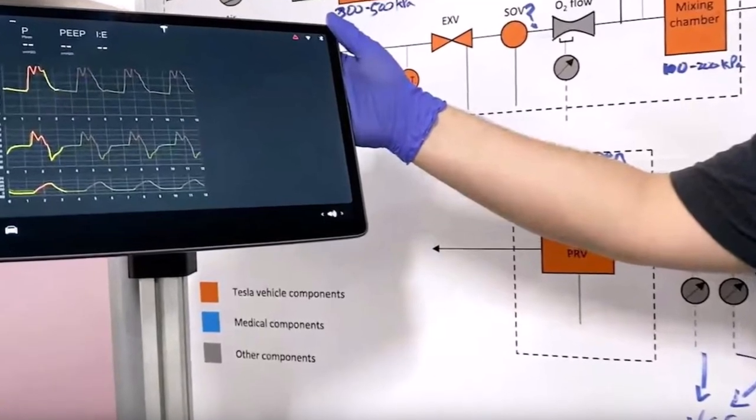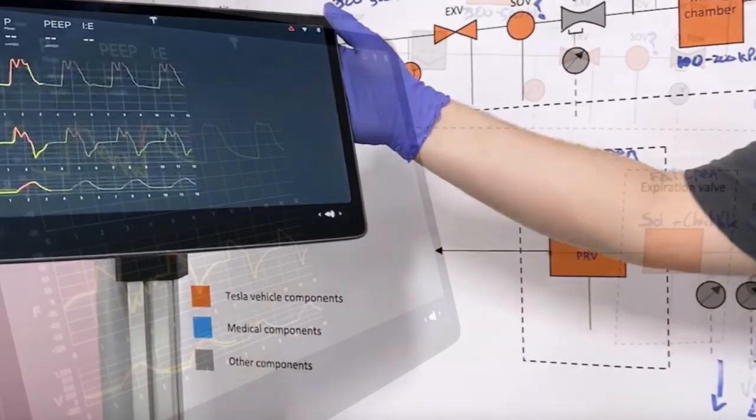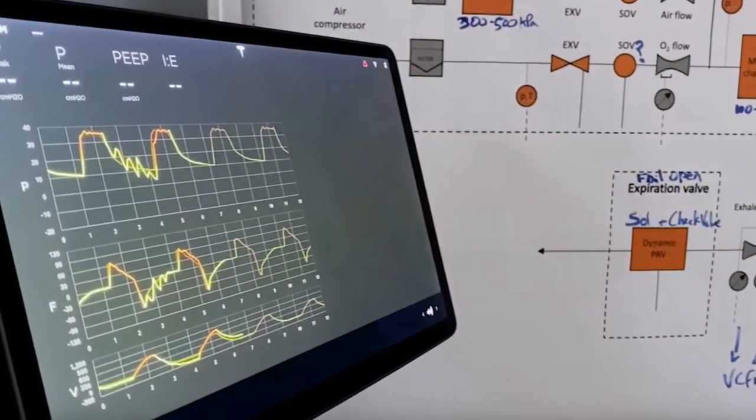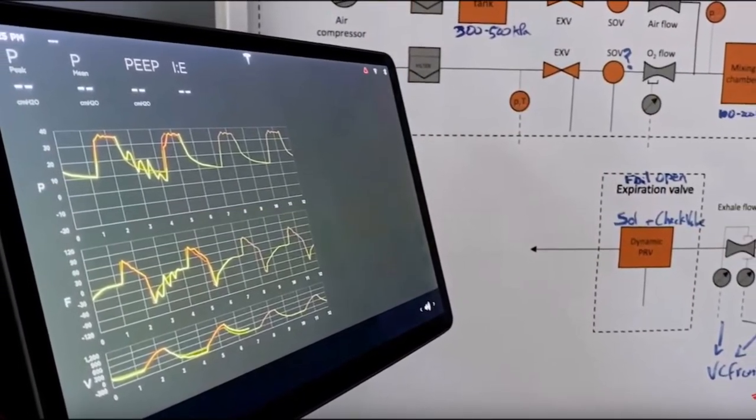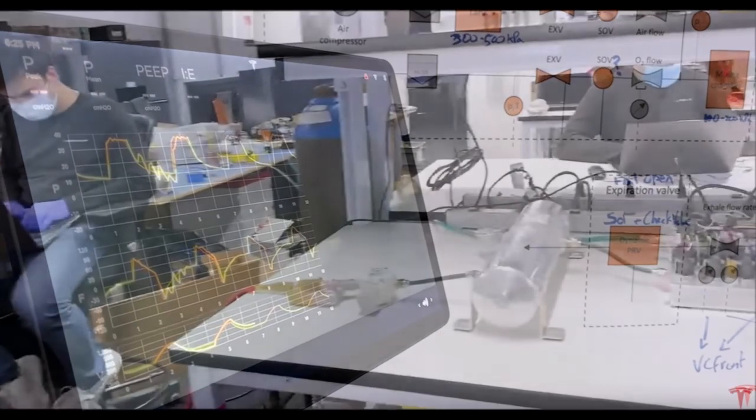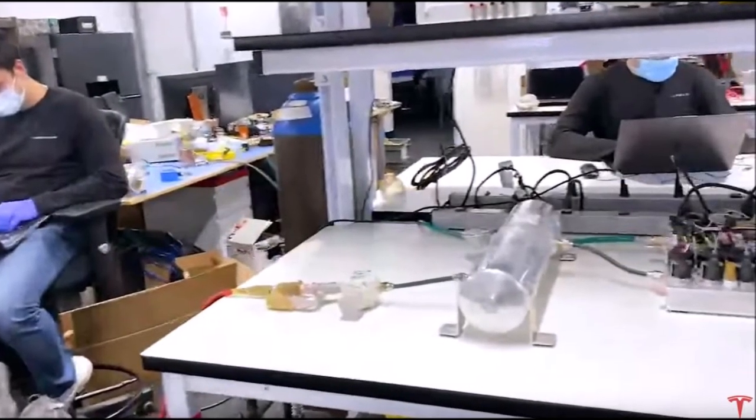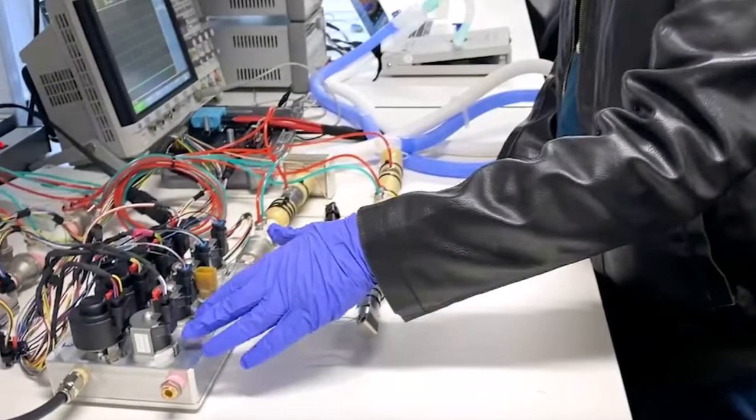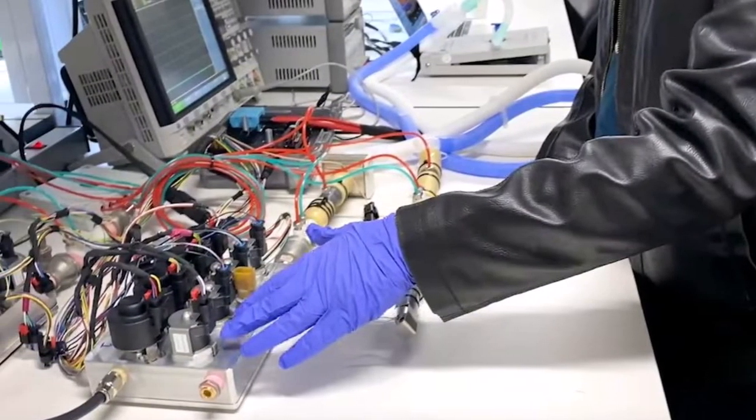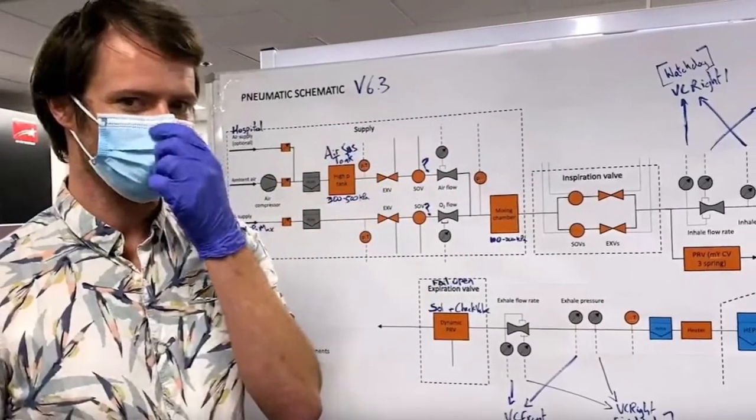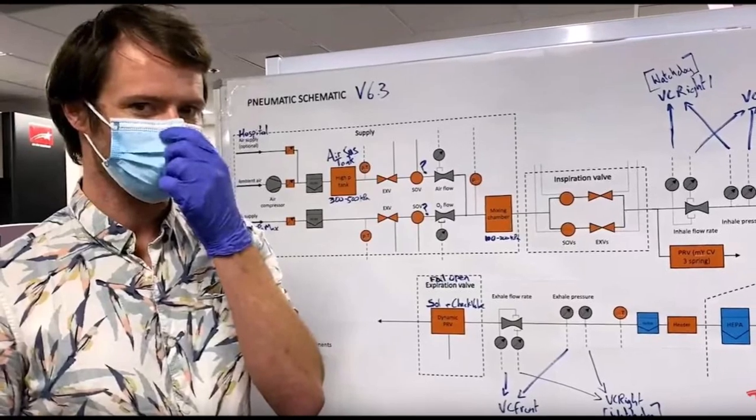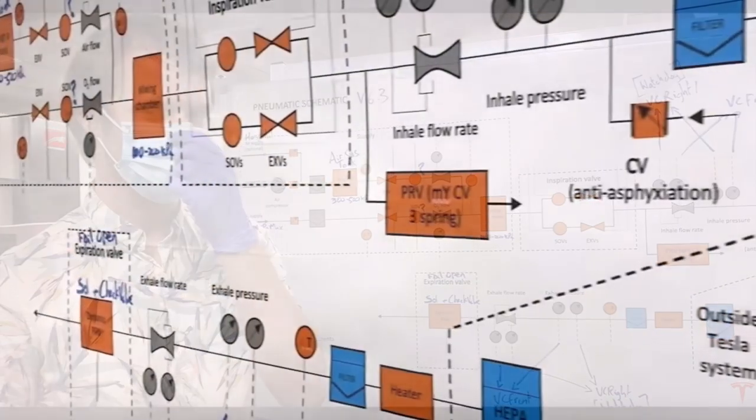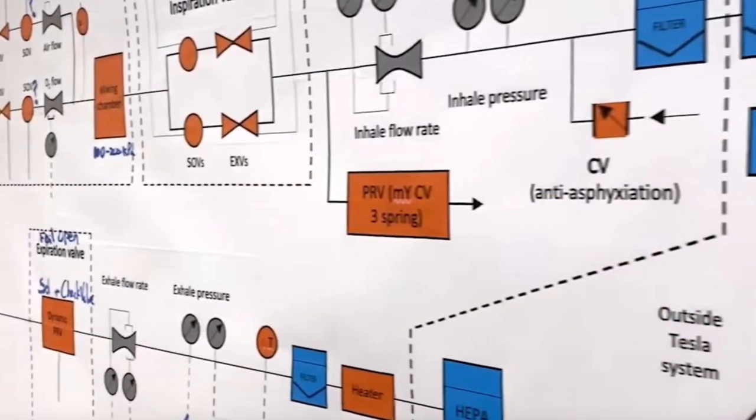However, when NYC Health and Hospitals tweeted to thank the CEO for the essential equipment, others pointed out that what was pictured were BiPAP (bilevel positive airway pressure) machines, which are not as useful for intensive care units according to The Financial Times.